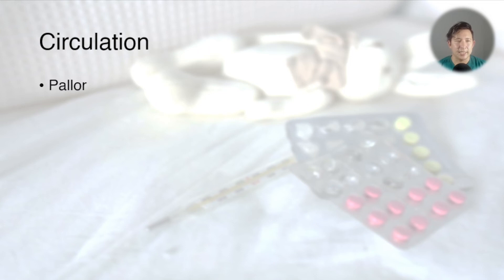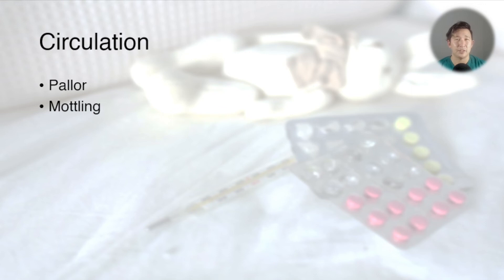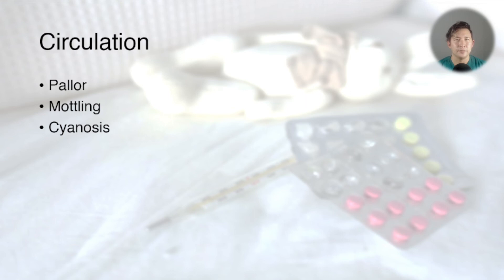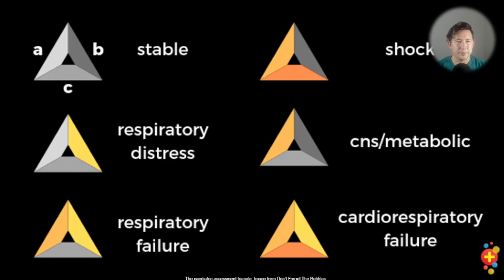Finally, C is for circulation, which is mainly looking at the color of the child. Pallor is probably the most worrying early sign. Mottling is another significant sign, although depending on ethnicity it might be normal for some babies, so ask parents whether it's new. Cyanosis is a really worrying sign but often occurs quite late, so it's not something you can rely on as the only indicator of sepsis or severe illness — cyanosis often doesn't develop until the beginnings of cardiorespiratory collapse.